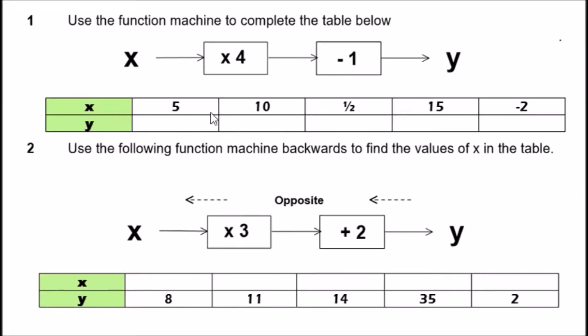So let's have a go. Number one: use the function machine to complete the table below. Here we're given our input which is x, and firstly they want us to multiply by four, then subtract one, and this will give us our output.